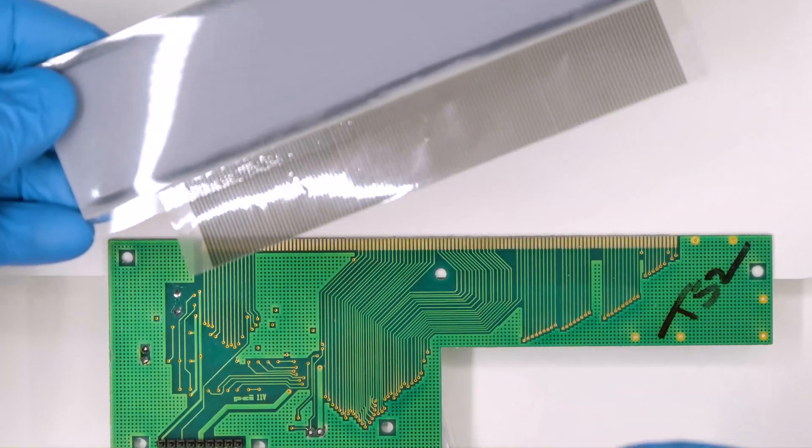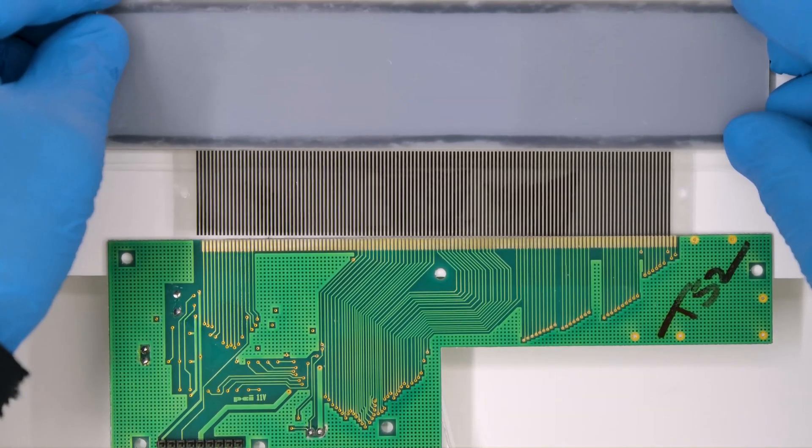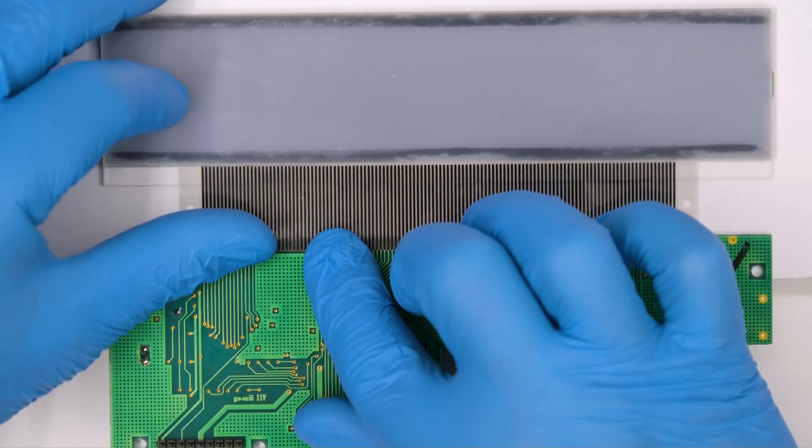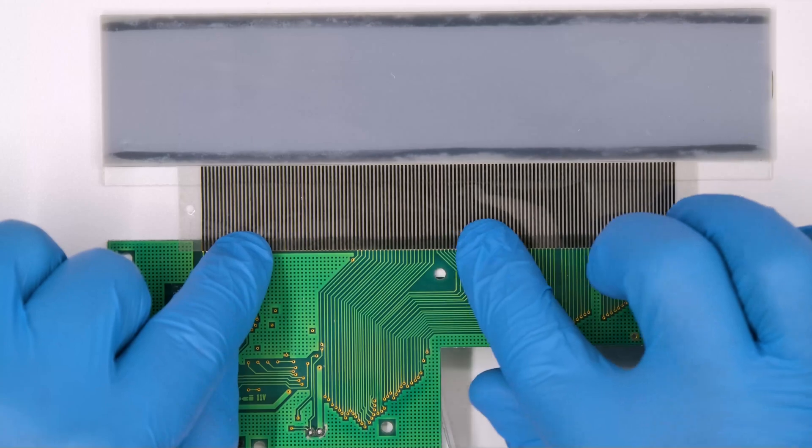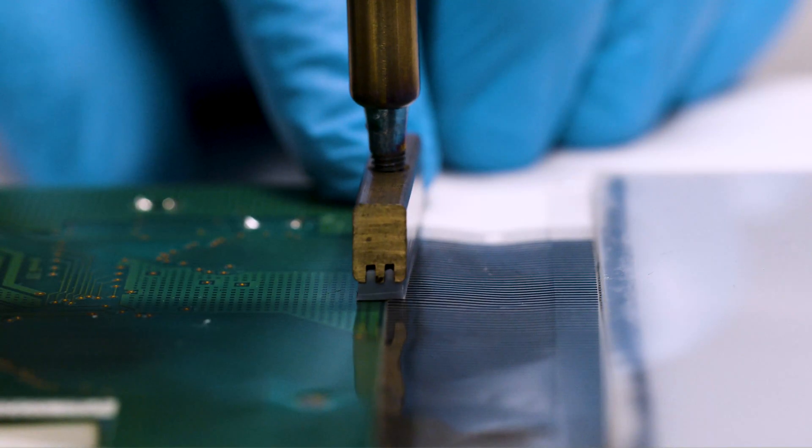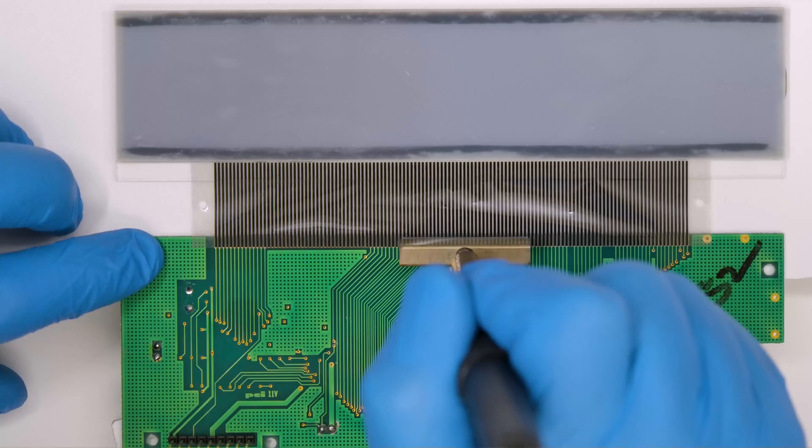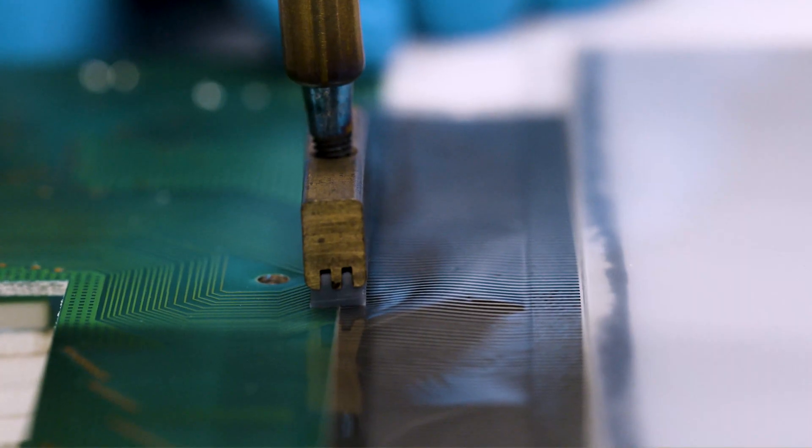Peel off the rest of the film from the rear of the flat and position it correctly on the board. Seal it with the soldering iron with T-tip at 350 degrees, gently pressing along the contacts.